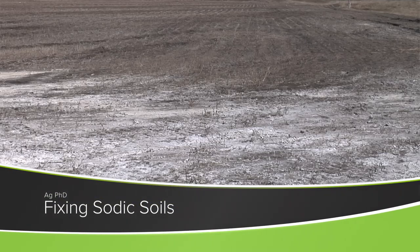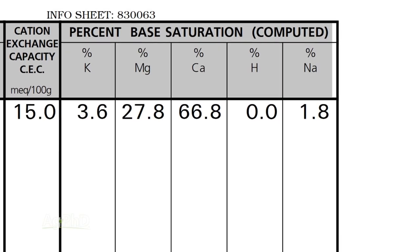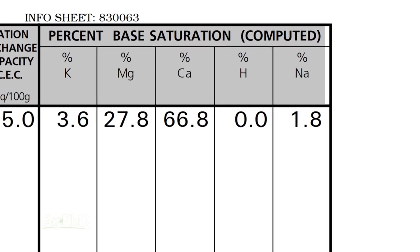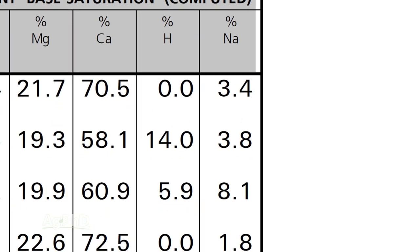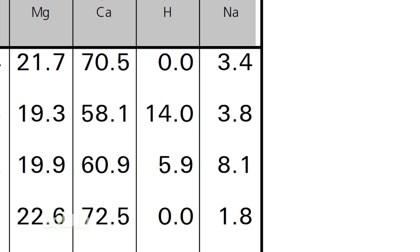When it comes to sodic soils, what we're really talking about is high sodium levels. There are some other factors people look at to technically call it a sodic soil, but we don't need to get super fancy here. Sodic soil is high sodium. To me, it's anything above 1% on the base saturation test, and especially once it gets above 3 or 5%, your soil is really starting to die.